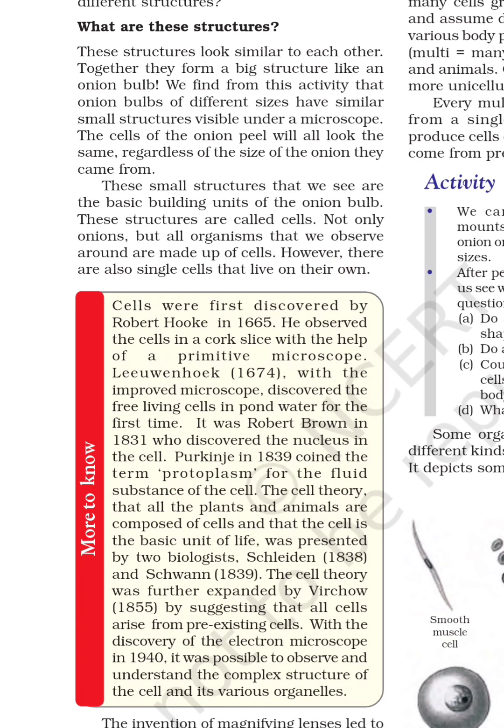These small structures that we see are the basic building units of the onion bulb. These structures are called cells. Not only onion, but all organisms that we observe around us are made up of cells. However, there are also single cells that live on their own.